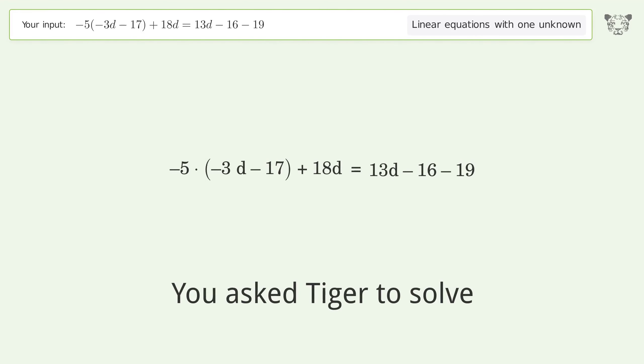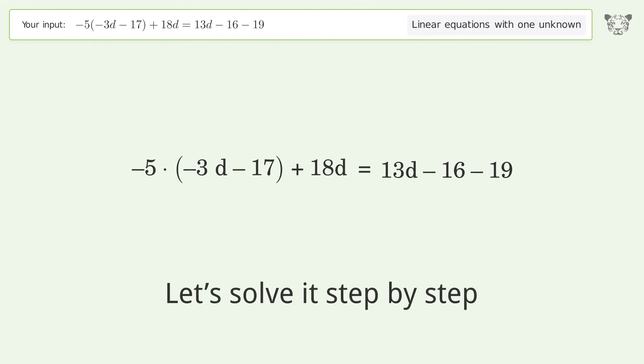You asked Tiger to solve this linear equation with one unknown. The final result is d equals negative 6. Let's solve it step by step. Simplify the expression and expand the parentheses.